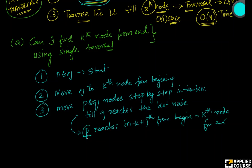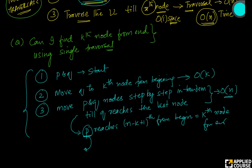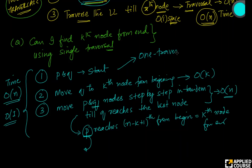The time complexity: moving q to the kth node takes O(k) time. Moving both pointers in tandem takes O(n) time since q moves n minus k more steps. Total time complexity is O(n). Space complexity is O(1) — I have an additional pointer q, but that is just constant space. The beauty of this approach is I am solving it in just one traversal using two pointers.